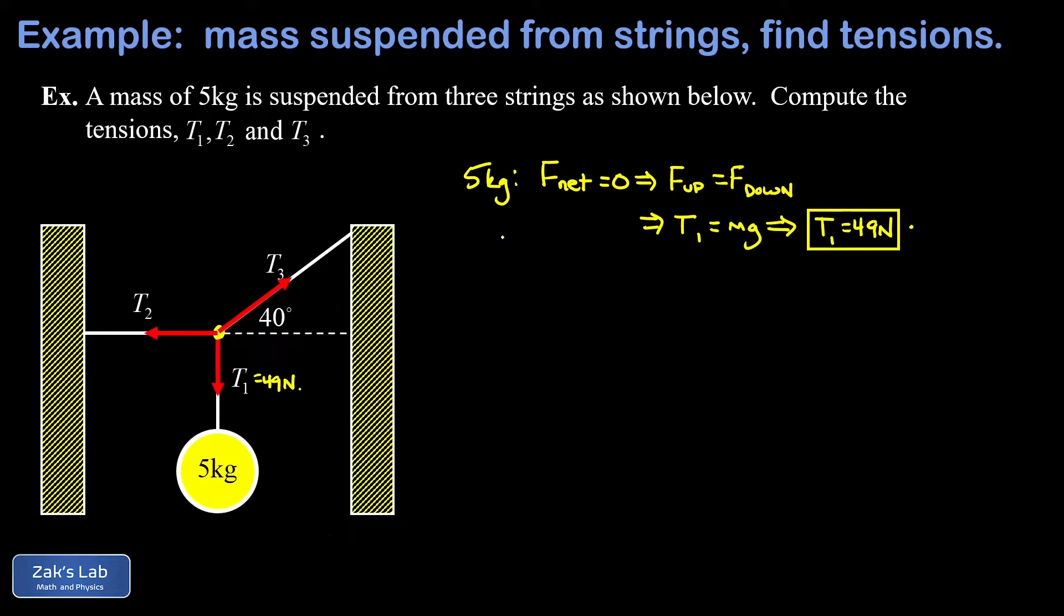We can start to do a force analysis on the knot in the string. Really what we're applying is Newton's second law, which is a vector equation. I can say F net equals ma, but a is zero here because everything is static, so F net equals zero. That splits into two equations, one for the x coordinate and one for the y coordinate.